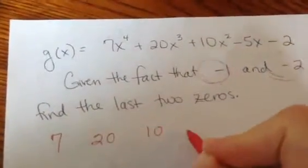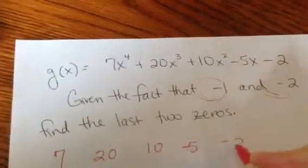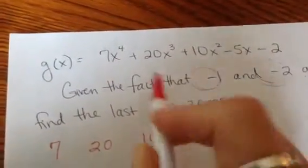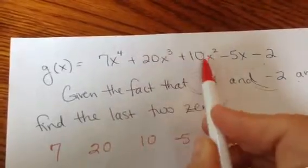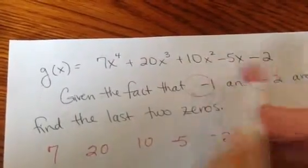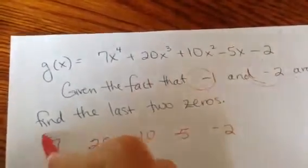So 20, 10, negative 5, negative 2. Notice I'm just writing down all the coefficients for my polynomial. I have an x to the fourth, x to the third, x to the second, x to the first, no x, so I'm not missing any terms. Always be really careful in that case.